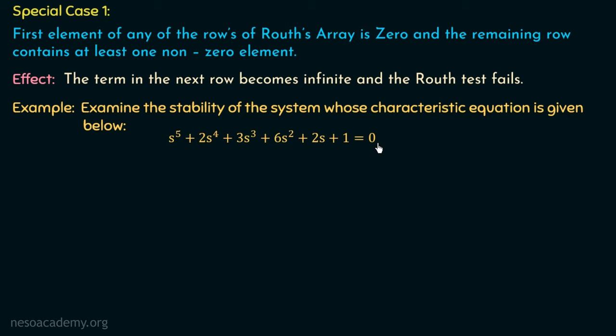We need to examine the stability using RH criteria. First, we check the necessary conditions of stability — is this characteristic polynomial also a Hurwitz polynomial? We can see that all the coefficients have the same sign; they are all positive. So the first necessary condition of stability is satisfied. This is a 5th order characteristic polynomial, and all the powers of s from s⁵ to s⁰ are present — none of the coefficients vanishes.